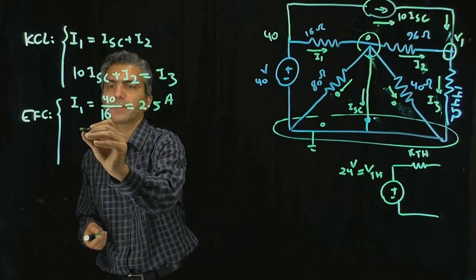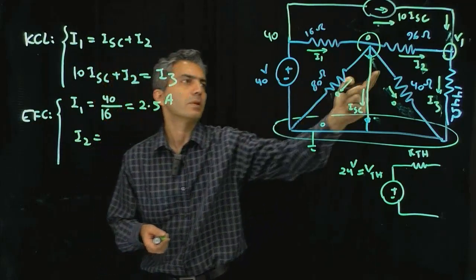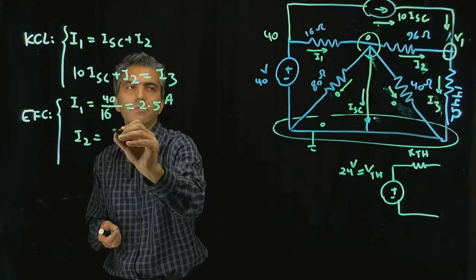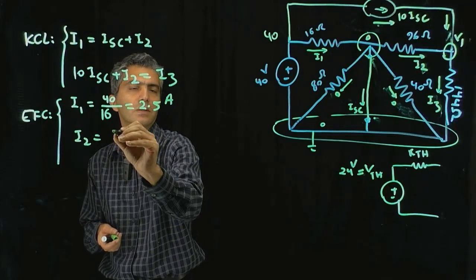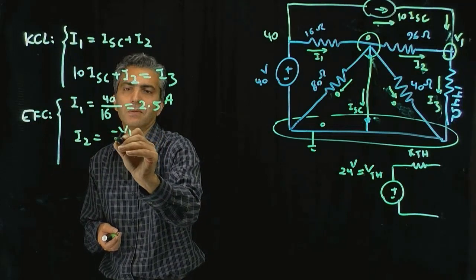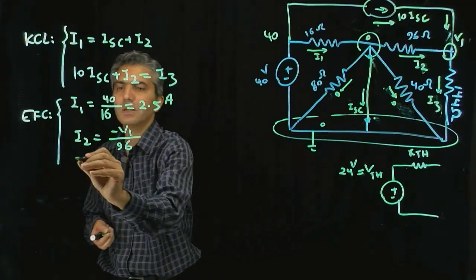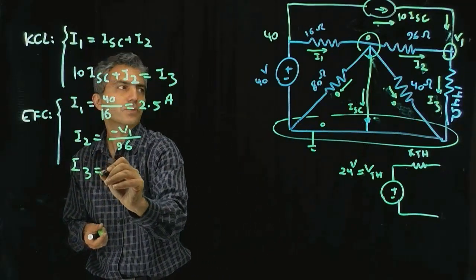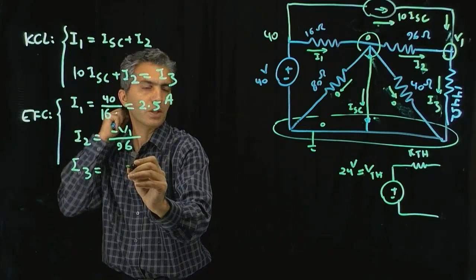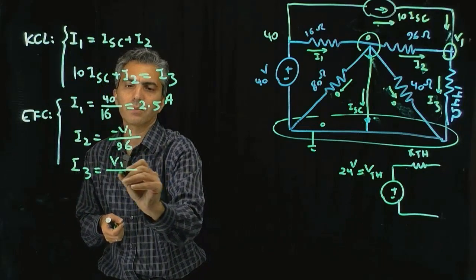Then I2, so that component is 0 minus V1, so it's minus V1 divided by 96, and I3 is equal to V1 divided by 144.